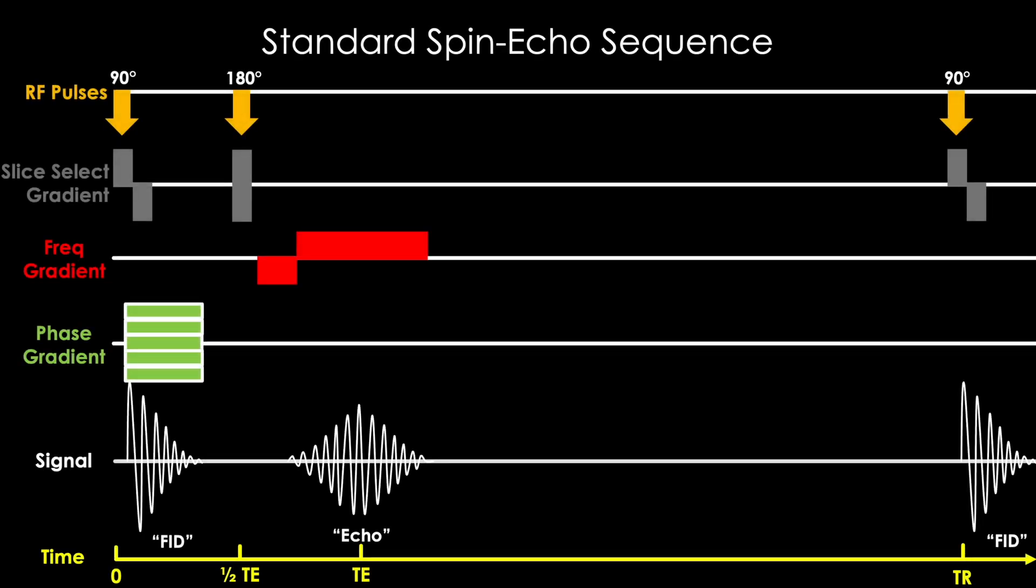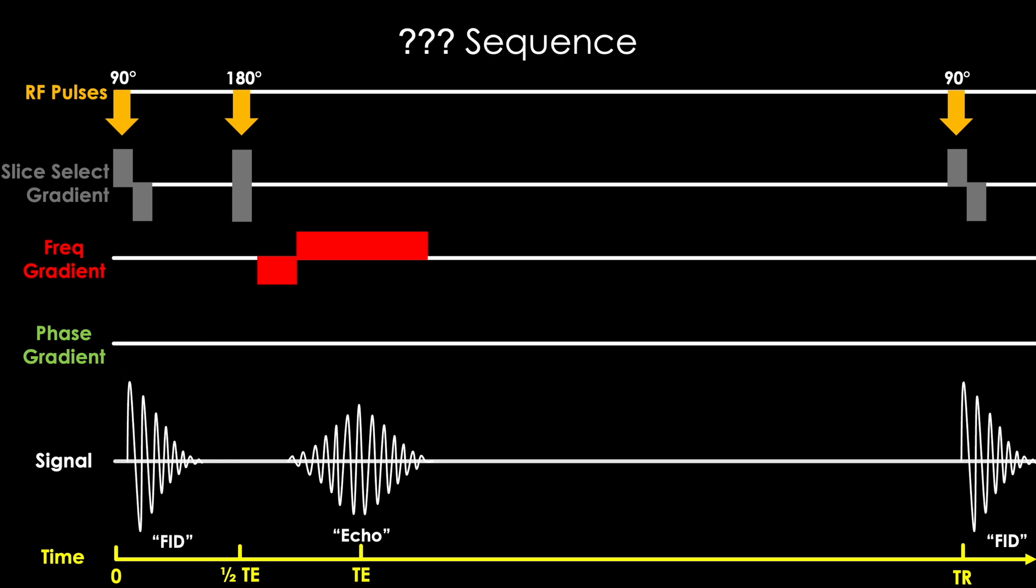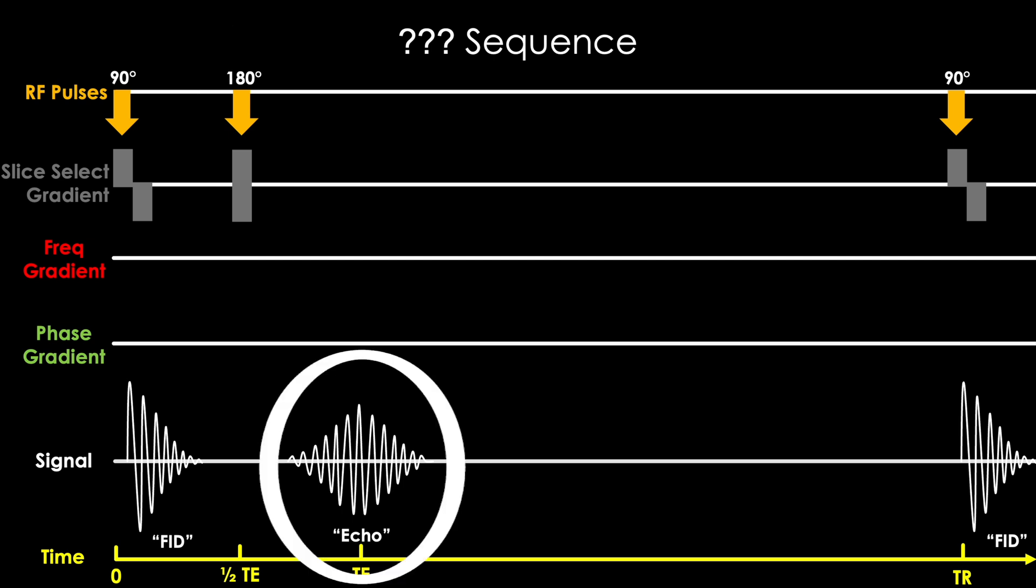So let's start with our standard spin echo sequence as a backbone for this yet to be named Ferrari sequence we're trying to create. Why the spin echo sequence and not the GRE sequence? Well, we know this sequence has better potential to produce multiple echoes as seen in our turbo fast spin echo technique, and oh do we want to produce multiple echoes this time. For now, let's not worry about this phase encoding gradient or this frequency encoding gradient. We know that because we applied this 180 degree rephasing pulse, we'll generate an echo that looks like this.